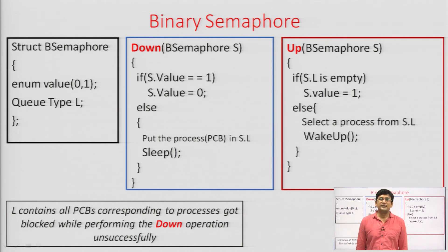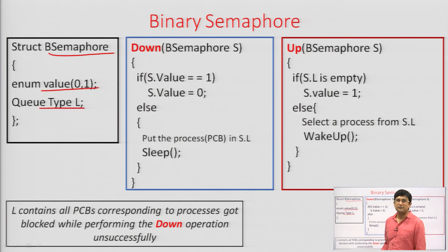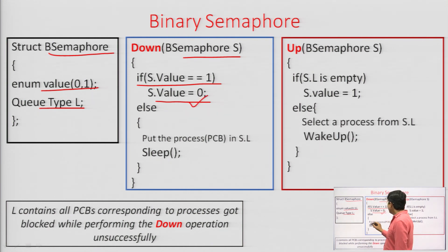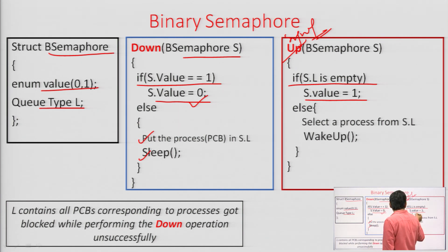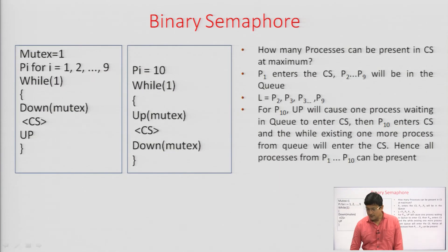The binary semaphore allows the semaphore value to be only 1 or 0, and we maintain a queue for the without busy waiting solution. If the semaphore value is 1, entry to the critical section is allowed — set it to 0. If it is not 1, put the process to sleep. When executing the signal (up) operation: if the queue is empty, set the binary semaphore value to 1; if the queue is not empty, take a process from the queue and wake it up for execution.